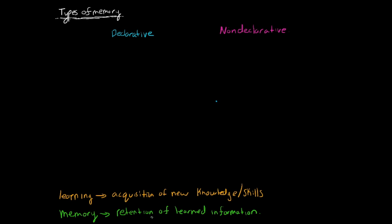The actual retention of these learned skills and knowledge is what the memory is. The two different types of memory are declarative and non-declarative.